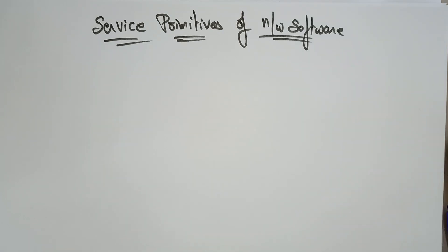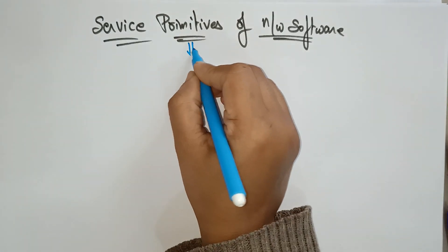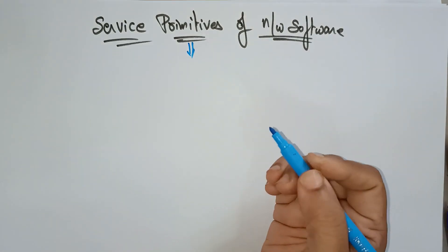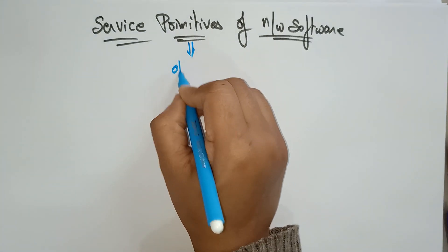Hi students, welcome back. Coming to the next concept in computer networks is service primitives of network software. Primitives are nothing but operations, student.